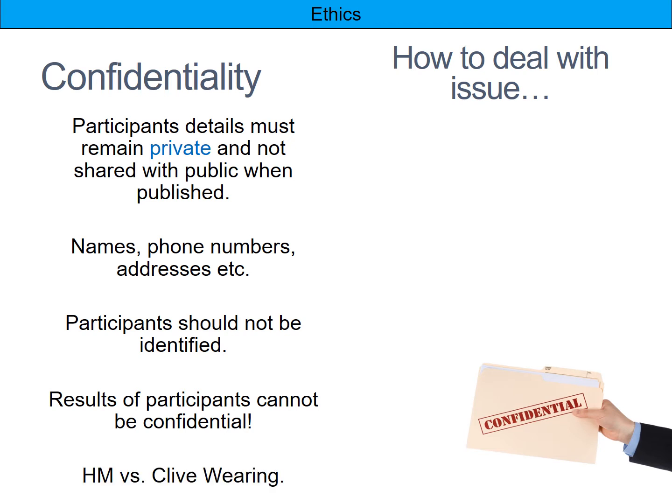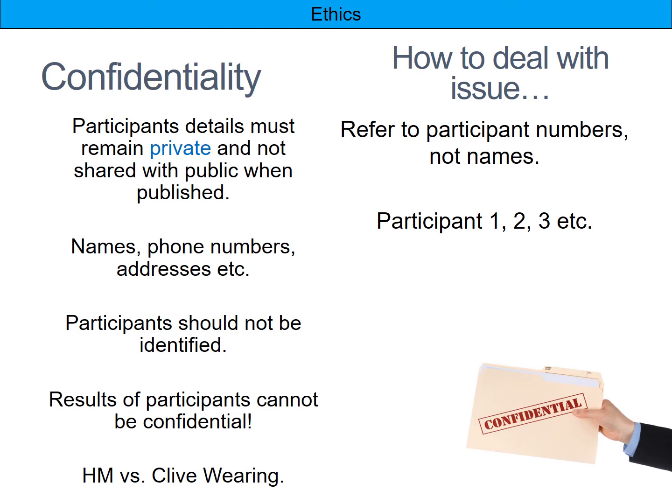To deal with confidentiality, refer to participant numbers rather than names, or use initials — Participant 1, 2, 3, etc. — and do not reveal any personal details whatsoever. For example, HM is referred to by initials for confidentiality, whereas Clive Wearing's full name was used because his wife consented to that disclosure. So how you handle names depends on the consent given.